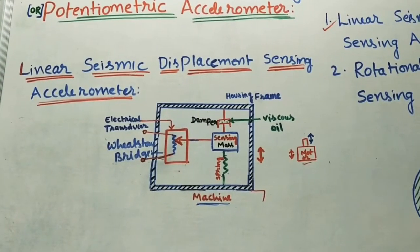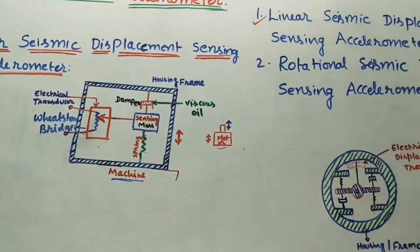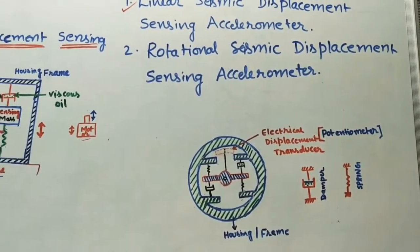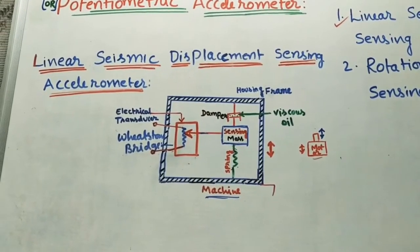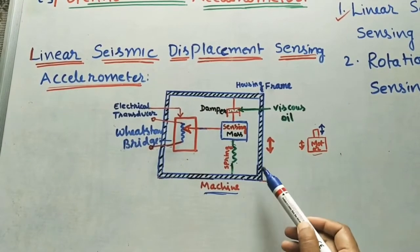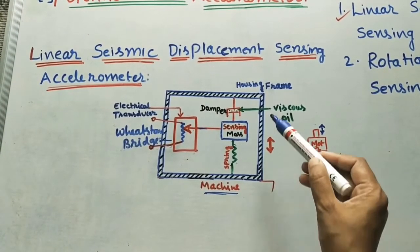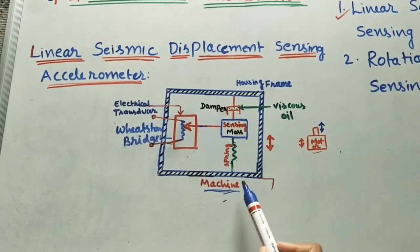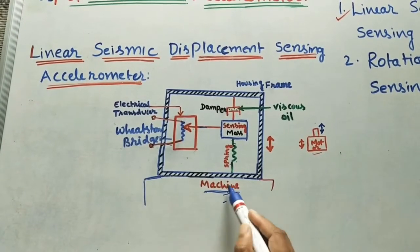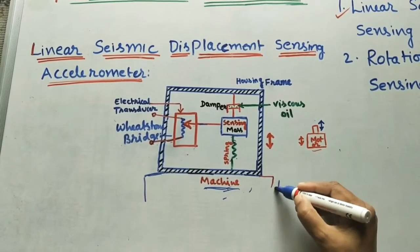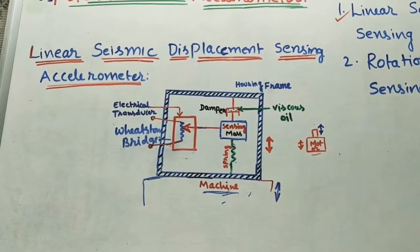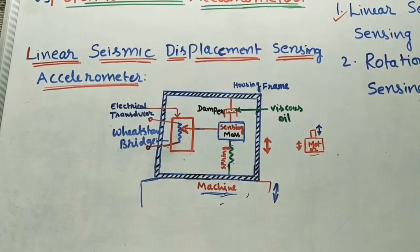There are two types. The first type is the linear seismic displacement accelerometer, and the second one is the rotational seismic displacement accelerometer. The difference is: in the linear seismic displacement type, the entire accelerometer frame is moving in linear form during the vibrations of a machine. The accelerometer is kept on the machine and moves linearly with it — that's why we call it linear seismic displacement.